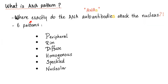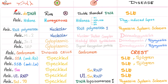Now let's talk about the patterns — where exactly do the ANA antibodies attack the nucleus? We have many patterns: peripheral/rim, diffuse/homogenous, speckled, and nucleolar. Here is the name of the antibody, here is the pattern, here is the target or antigen, and here is the associated disease.